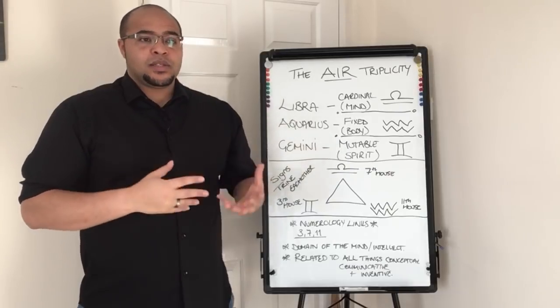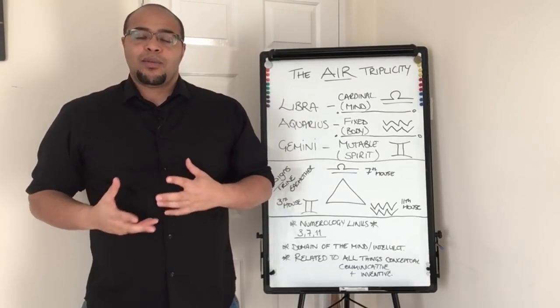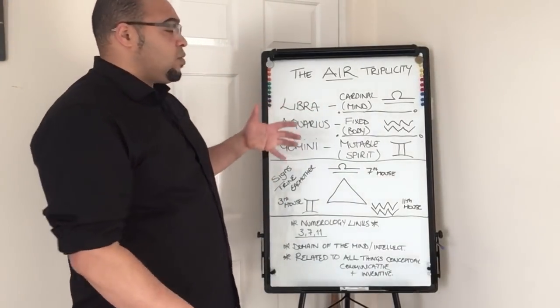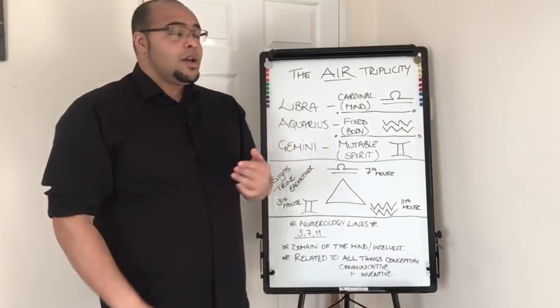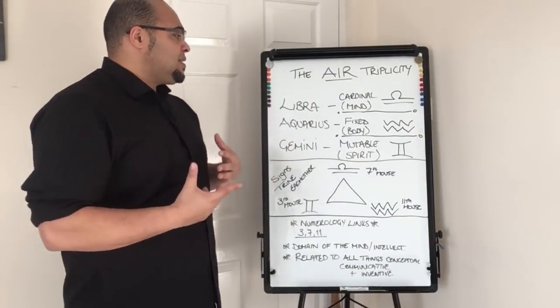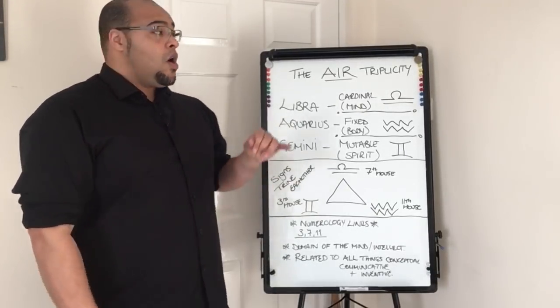What I want to talk about is the triplicities belong to an element group. The triplicity of air contains Libra, Aquarius, and Gemini. In a triplicity, you will have all three types or qualities of signs.